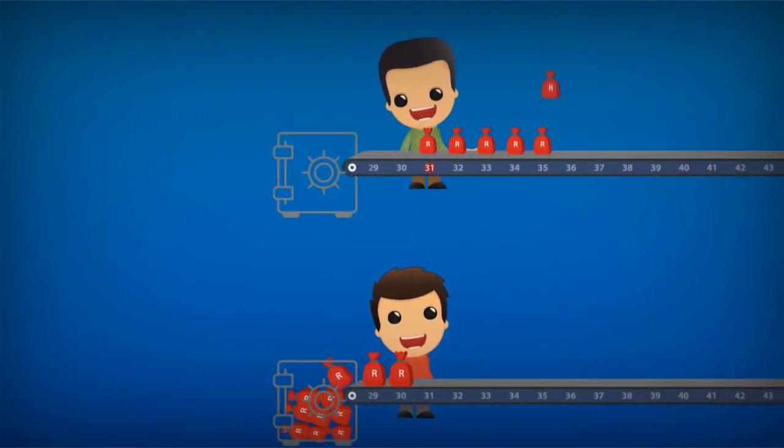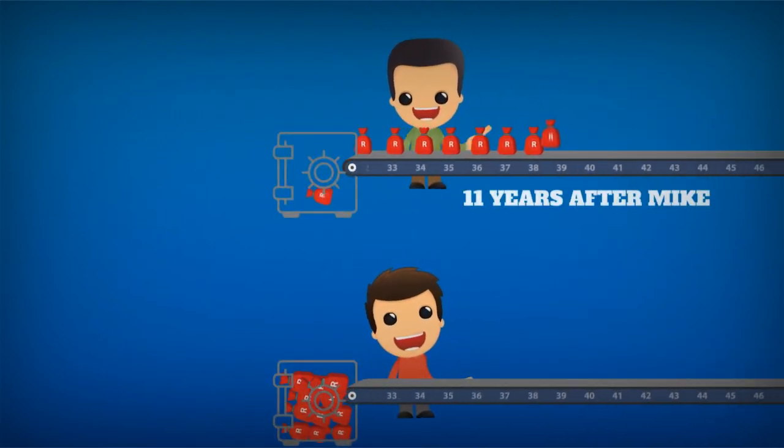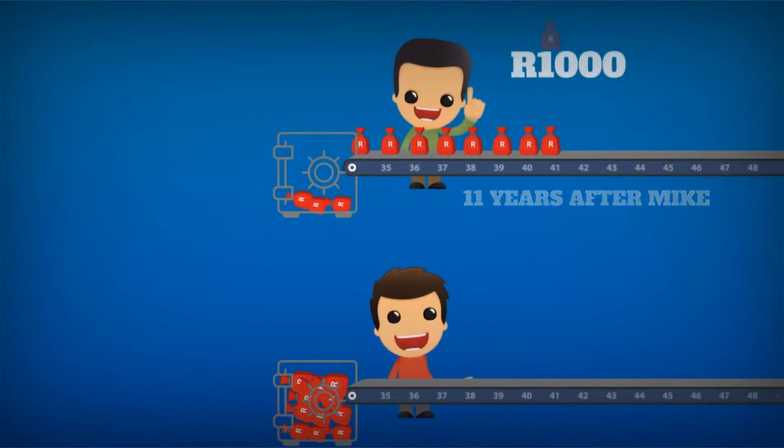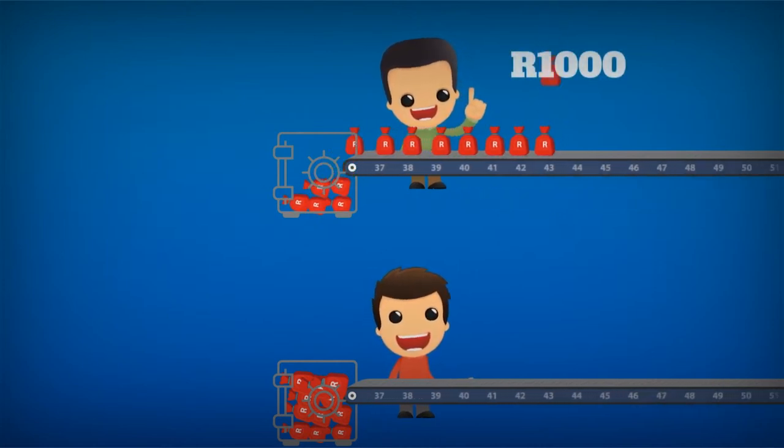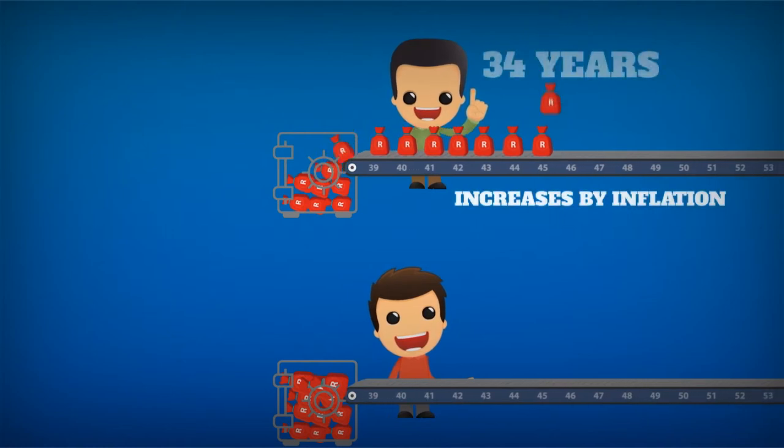Vigo starts investing 11 years after Mike at 31. He too contributes 1,000 Rand in year one into the JSE and increases his contribution by inflation each year for a whole 34 years.